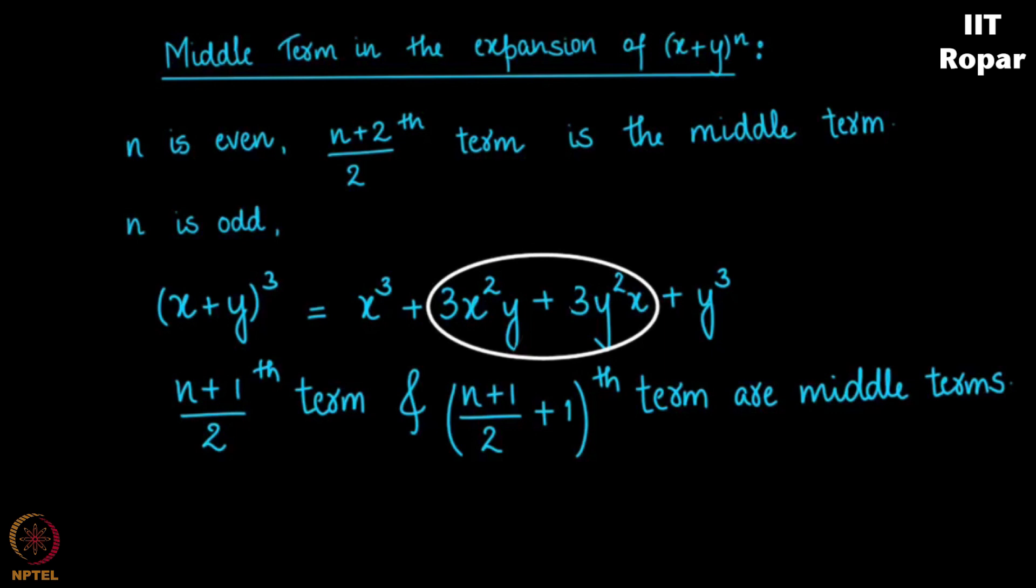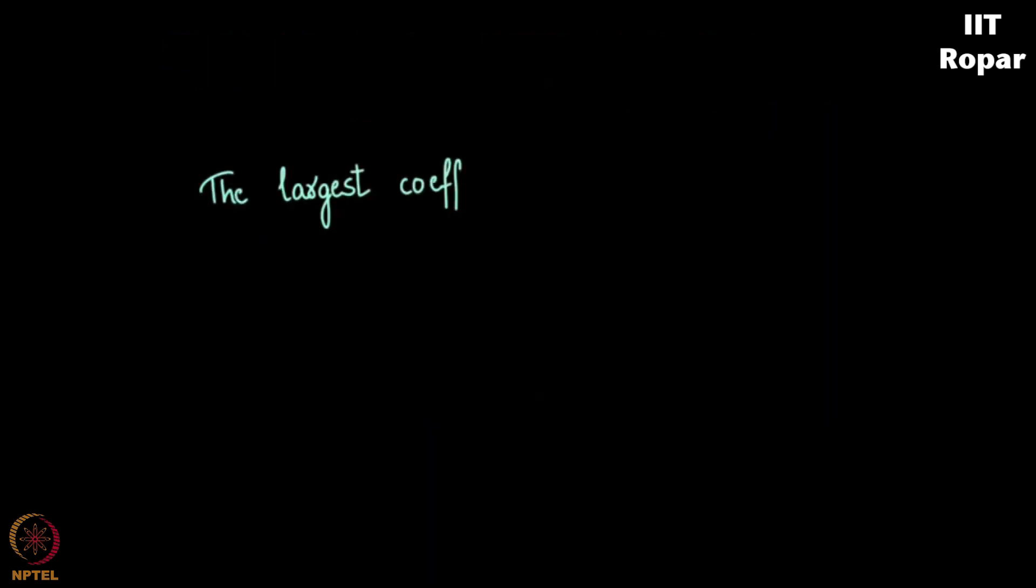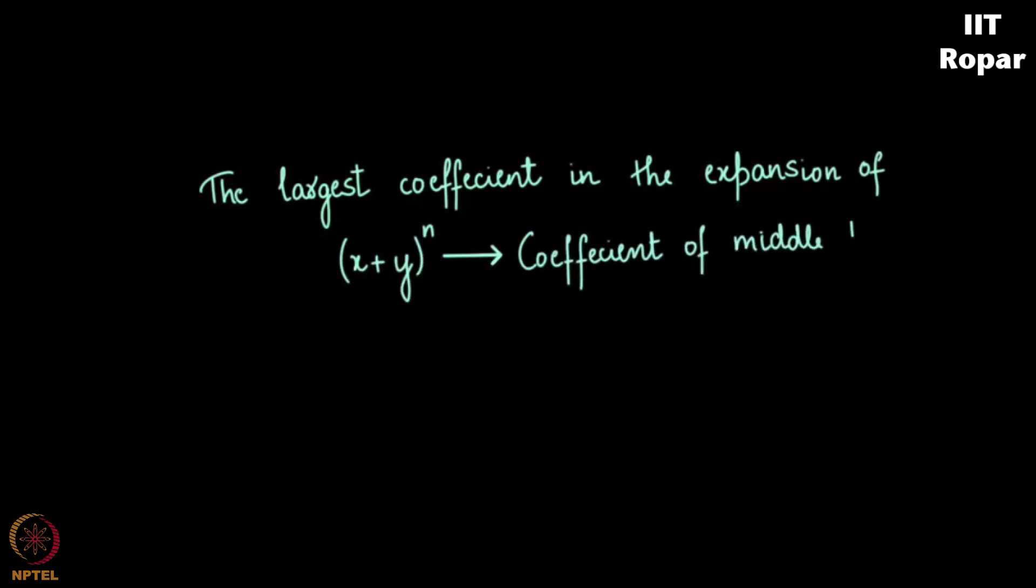Now the largest coefficient in the expansion of x plus y whole power n will be the coefficient of the middle term. This must be quite intuitive because you see in the expansion, n choose 0 and n choose n both turn out to be 1. You see the coefficients keep increasing till a point and then go on decreasing. So the point where it is highest is the coefficient of the middle term.